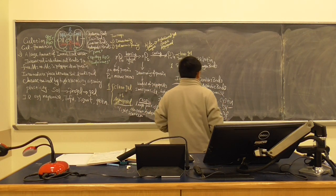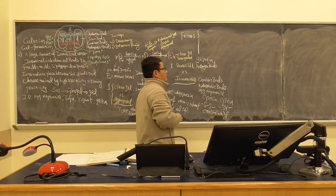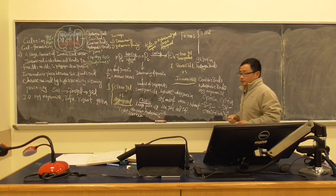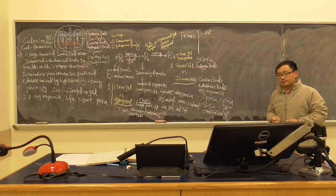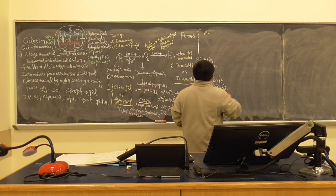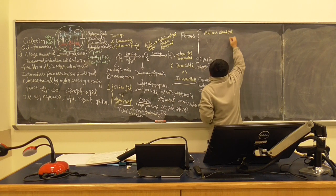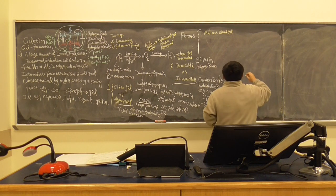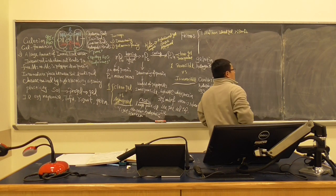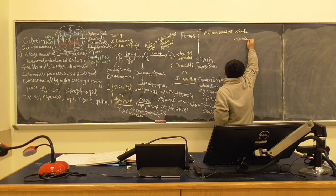Next we talk about factors that impact gel formation. Number one is the molecular weight — the size and molecular weight of the protein or amino acids is important, especially for heat-induced gel. It is very easy to have gel formation if the molecular weight is more than 23,000 daltons. If the molecular weight is less than 20,000 daltons, it is not easy to form gel.